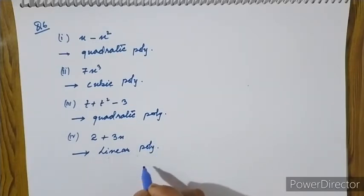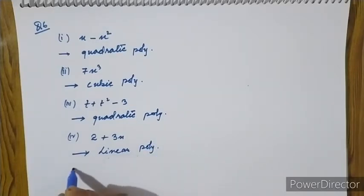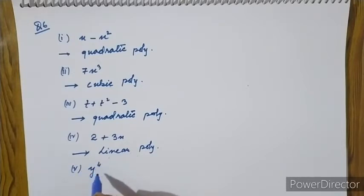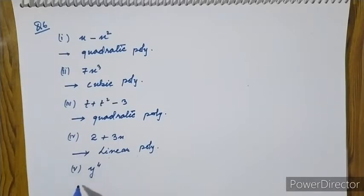Roman numeral 5: y to the power of 4. The degree is 4, so this is a biquadratic polynomial.